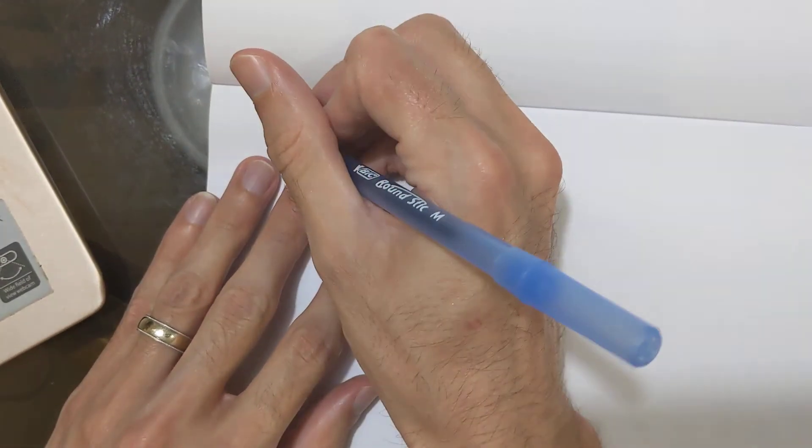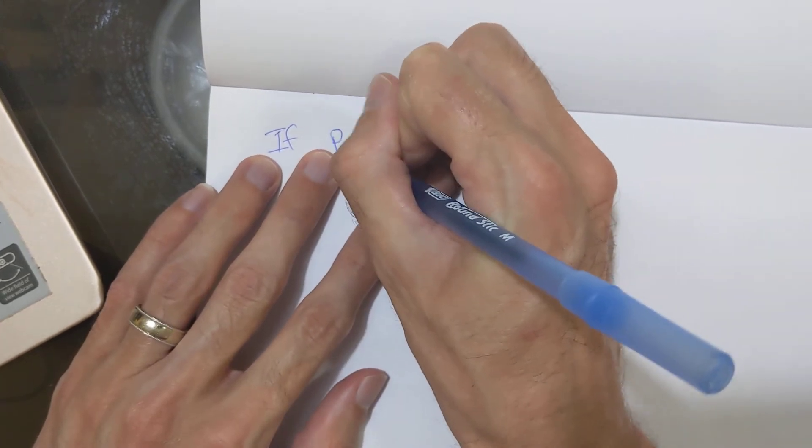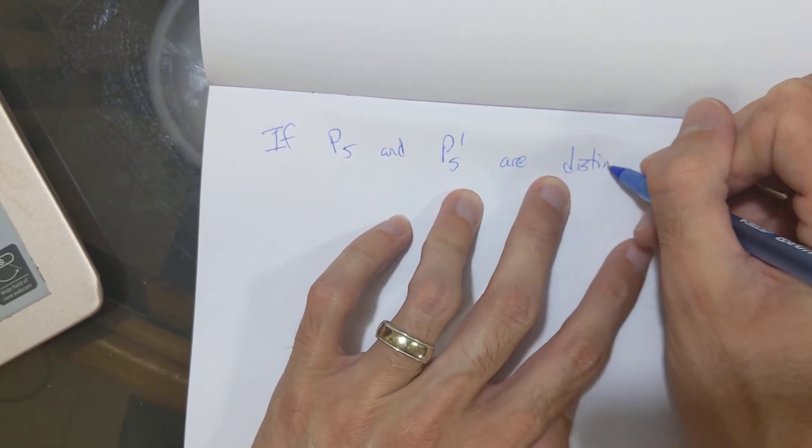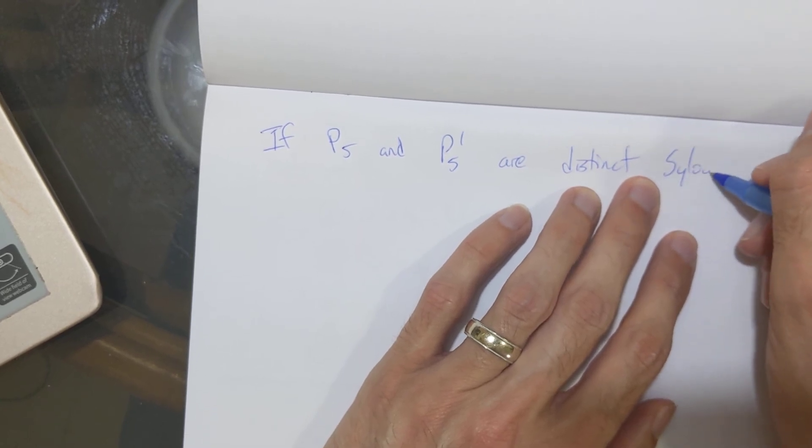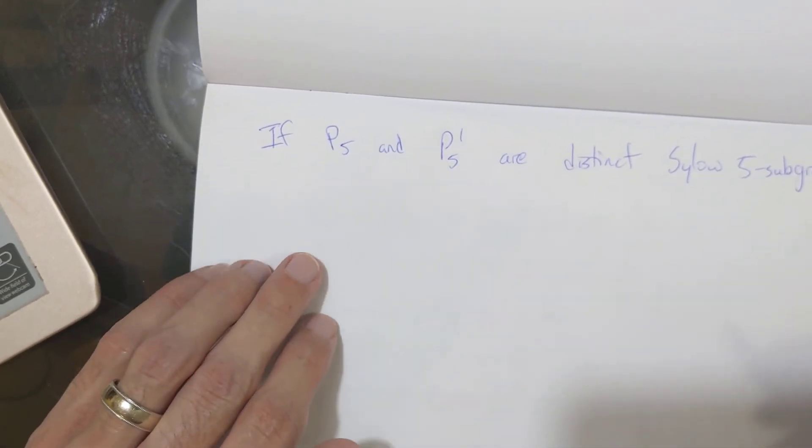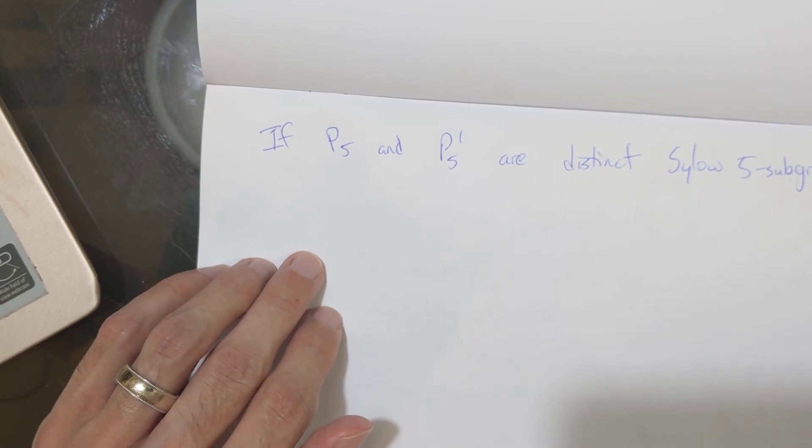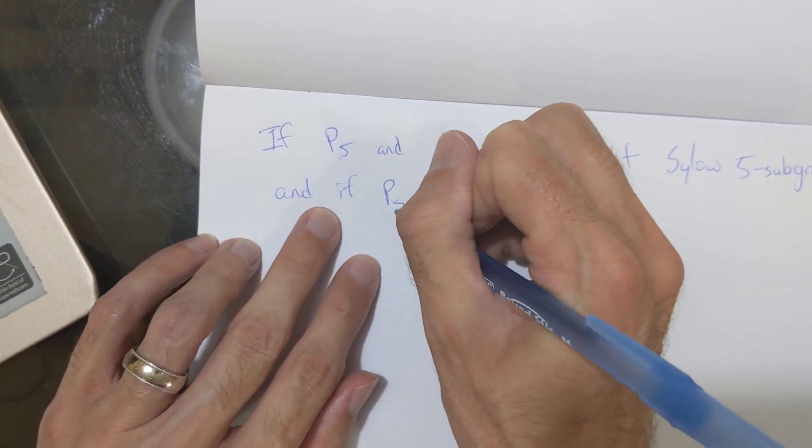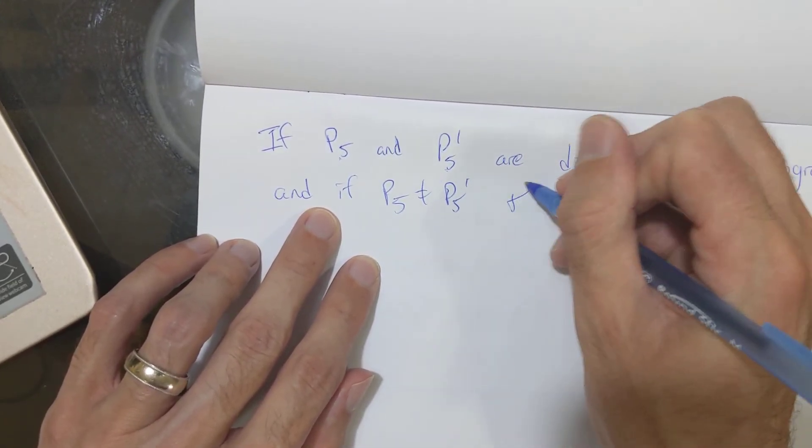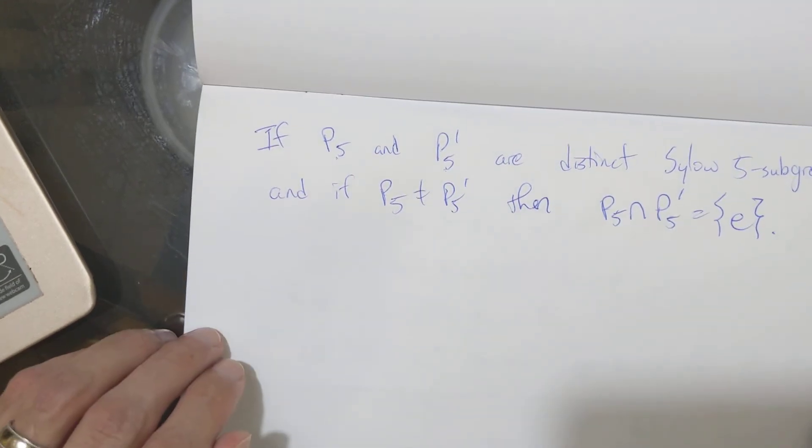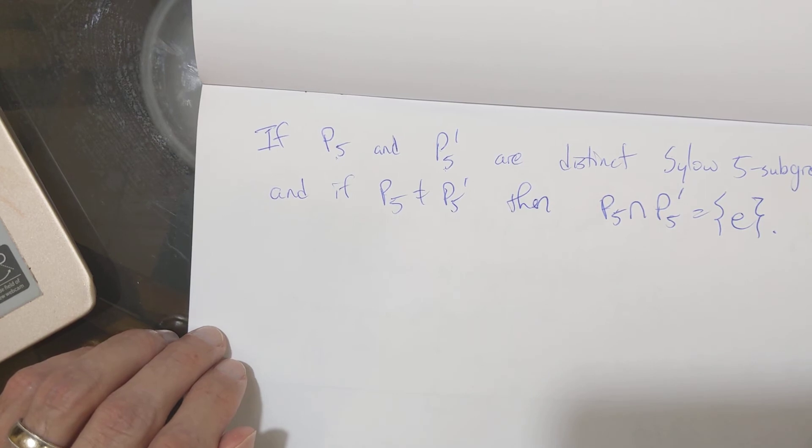Okay. And the same thing happens. So, if P5 and P5 prime are distinct Sylow 5 subgroups, well, they both have five elements, and their intersection has either one or five elements. If their intersection has five elements, well, that means that P5 and P5 prime are the same. And if P5 is not equal to P5 prime, then P5 intersect P5 prime is just trivial.